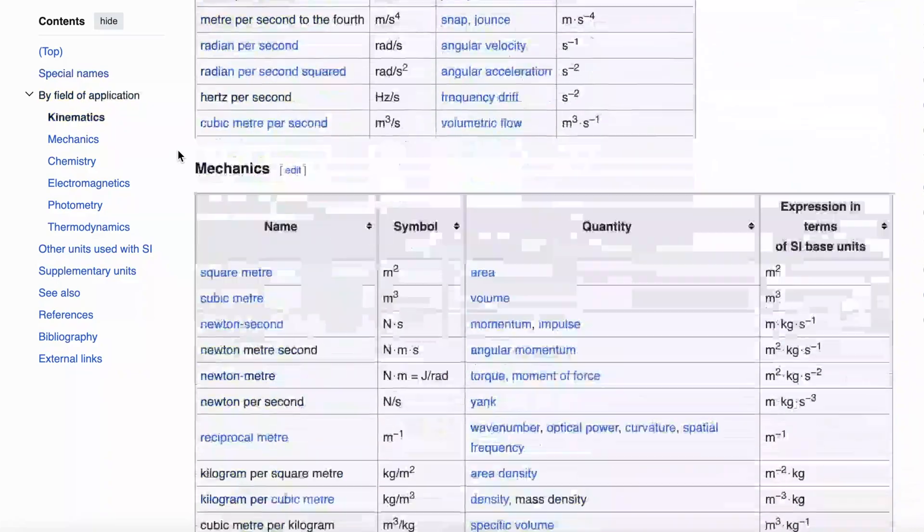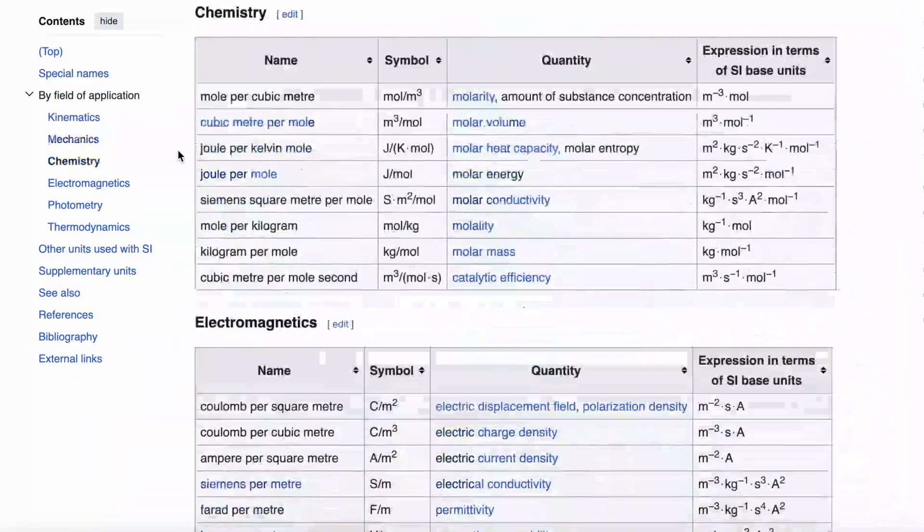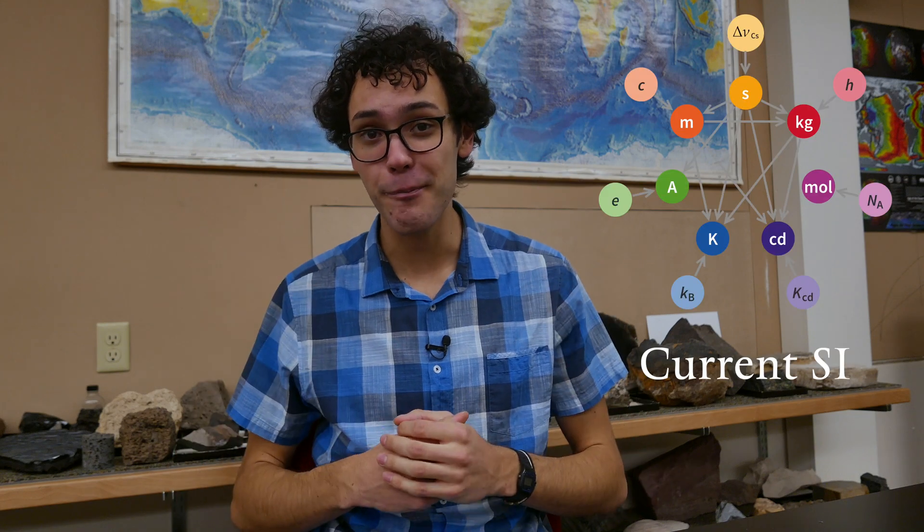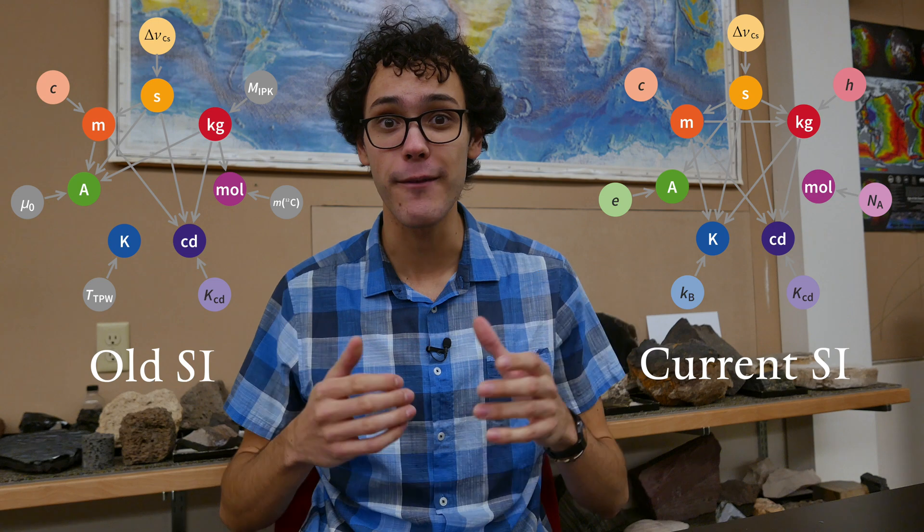And this change didn't only affect the kilogram. The kilogram is actually used in the definitions of two other base units, as well as dozens of other derived SI units. So just five years ago, for the first time ever, we had a system of units based entirely on fixed constants of nature, and not faulty physical objects.